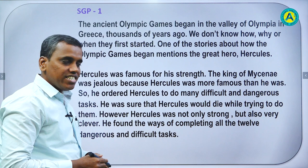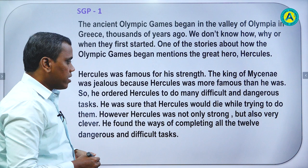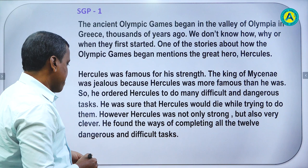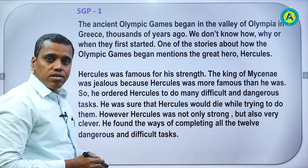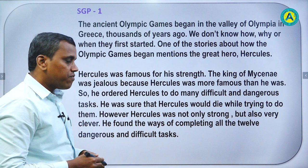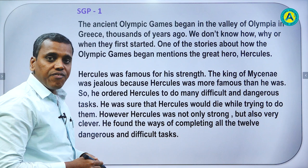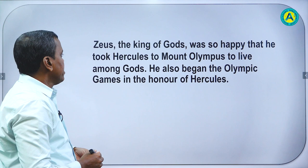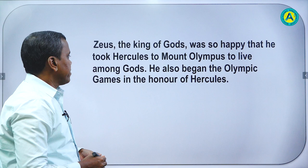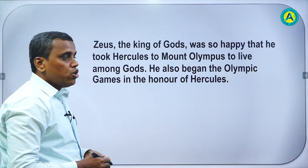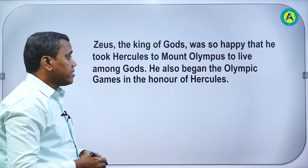The king of Mycenae was jealous because Hercules was more famous than he was. So he ordered Hercules to do many difficult and dangerous tasks. He was sure that Hercules would die while trying to do them. However, Hercules was not only strong but also very clever. He found the ways of completing all the 12 dangerous and difficult tasks. Zeus, the king of Mycenae, was so happy that he took Hercules to Mount Olympus to live among gods. He also began the Olympic games in the honor of Hercules.